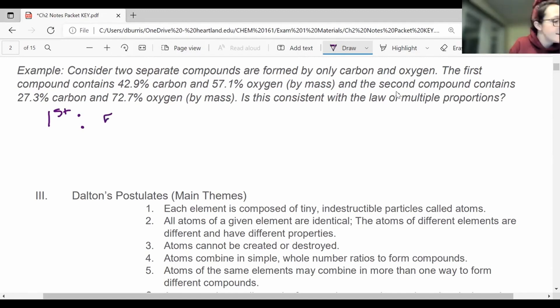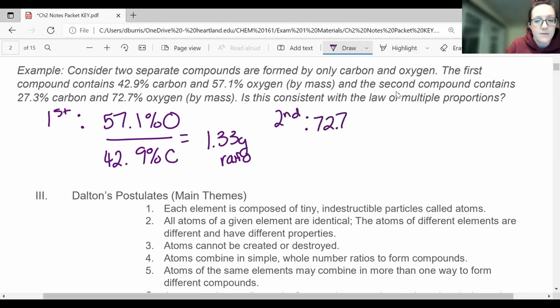and it is 57.1% oxygen to 42.9% carbon. Okay, so if I actually divide those, I get that this is a 1.33 gram ratio. And then if I do the second one, 72.7% oxygen to 27.3% carbon, that is a 2.66 gram ratio.